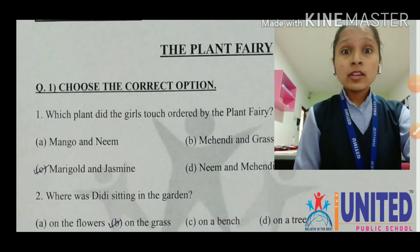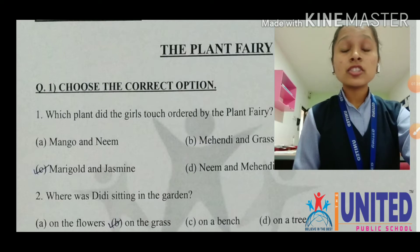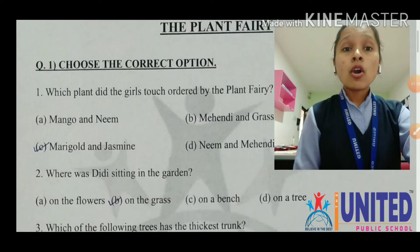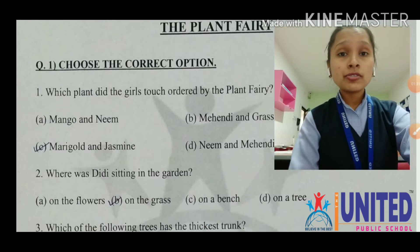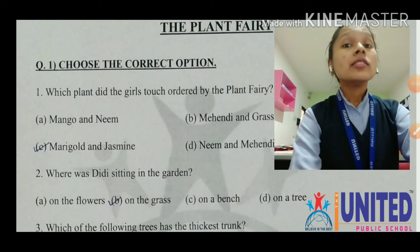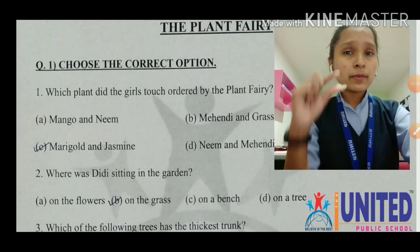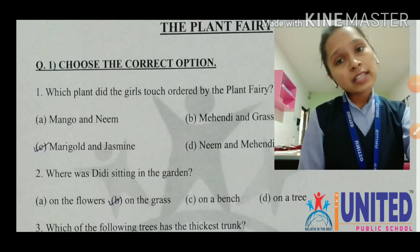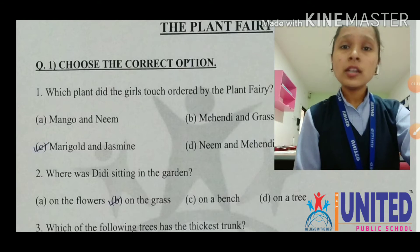Second number: where was didi sitting in the garden? Didi kis pe baithe tha? On the flowers, on the grass, on a bench, or on a tree? Didi was sitting on small small plants in the garden, right? That is on the grass. Option B, on the grass.